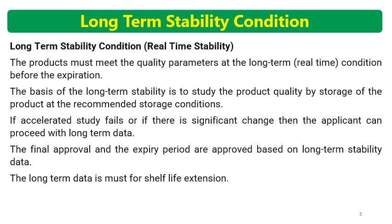If accelerated stability study fails or if there is a significant change, the applicant can proceed with long-term data. Sometimes along with long-term data, intermediate data is used for extrapolation purposes. The final approval and expiry period are approved based on the long-term stability data. If the product shows significant change at both accelerated and intermediate conditions, long-term data can support the expiry period.